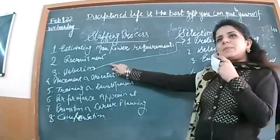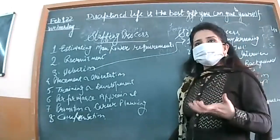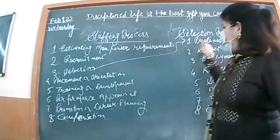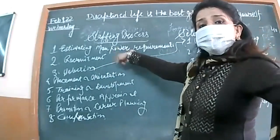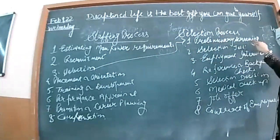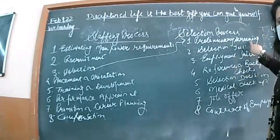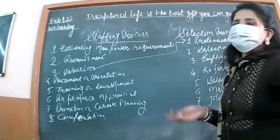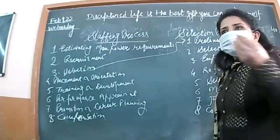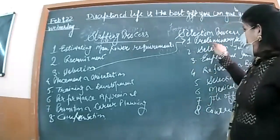In this context, recruitment is positive process with zero rejection degree because we convince more people to apply. Selection has high rejection percentage. In selection process, we start with preliminary screening. First we see which applications have come, which have required qualifications and experience. Like if I asked for three years experience, applications from freshers or two years experience will be rejected outright. Here on the first step rejection starts. This is preliminary screening, then selection tests.